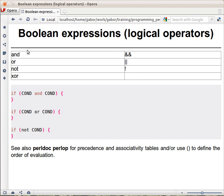You can use either these or these and the meaning is the same, so 'and' is the same as the ampersand sign. Except that the precedence of these operators is different.